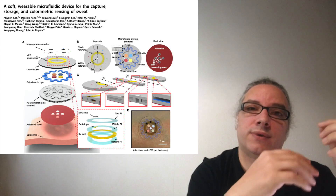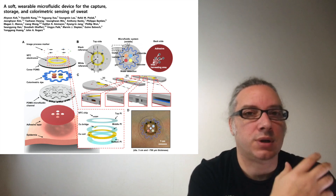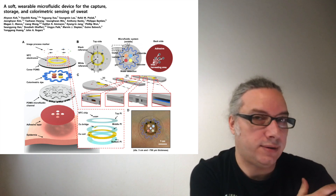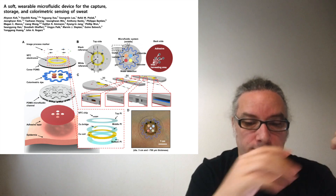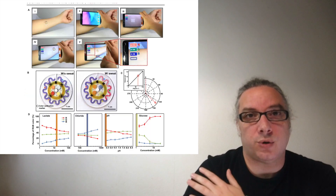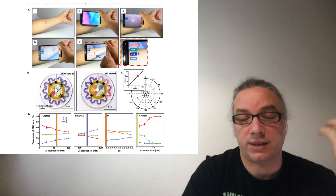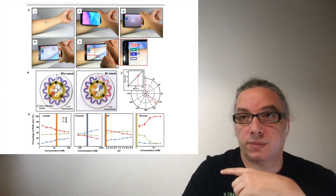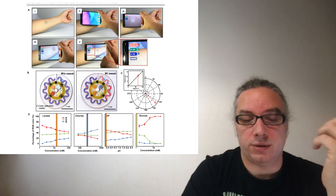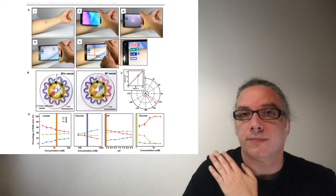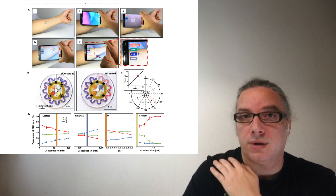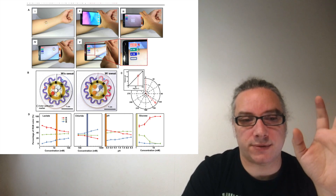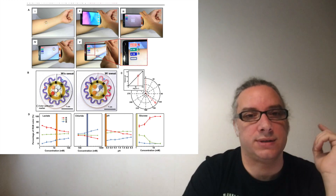Another interesting thing about PDMS on PDMS is that it's stretchable. Now I can use it for sensors on skin, for example — because there's no glass, I can stretch, I can bend, and nothing happens to the microfluidics. This is one sensor you can put on skin that will detect different analytes in sweat. I'll link this paper in the video or on Brightspace. It's really interesting to see how a wearable sensor can work this way.